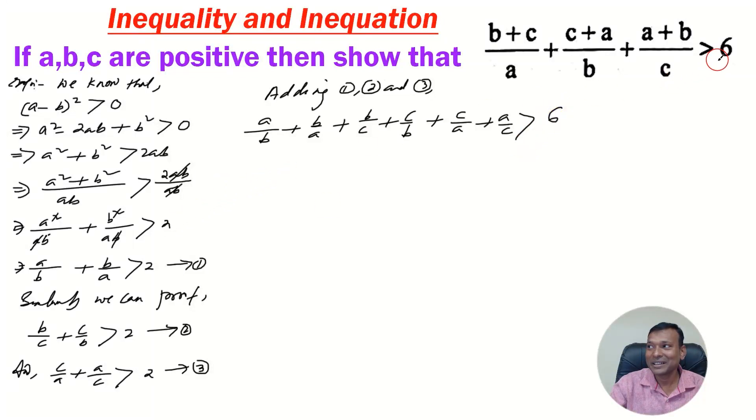We can see, right hand side got 6. Just we have to arrange the left hand side. For it, now let us find the fractions with denominator a.